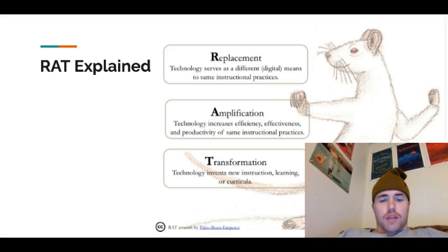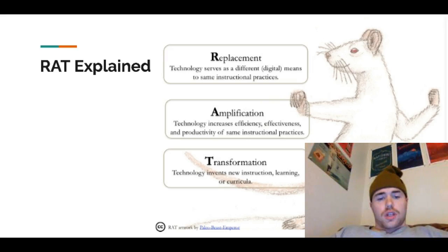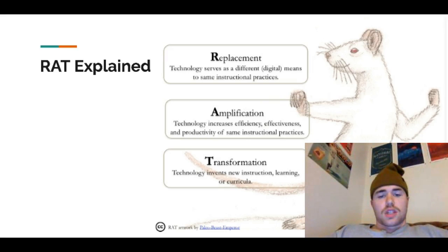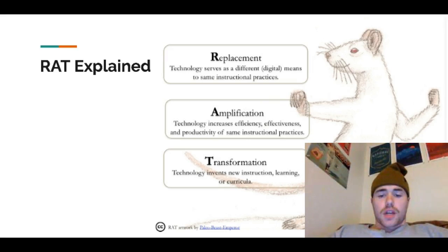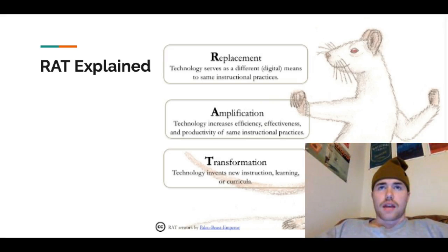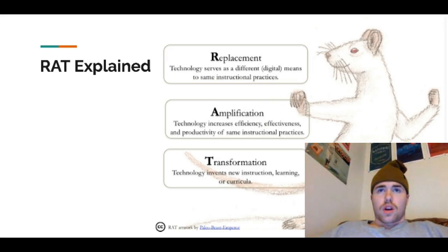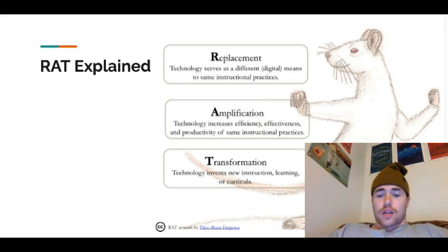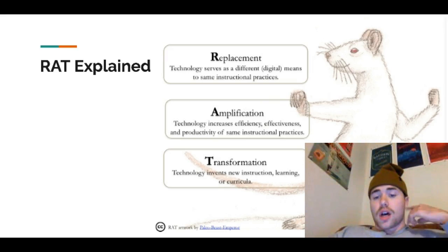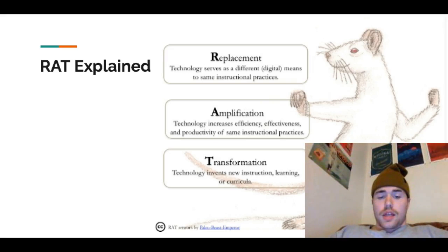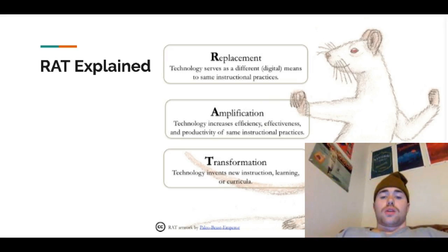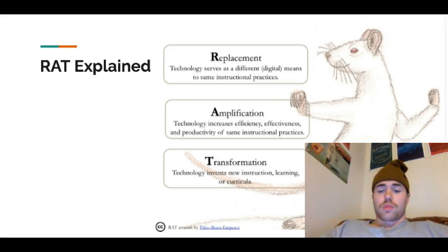The A in RAT stands for amplification, which they define as technology increasing efficiency, effectiveness, and productivity of the same instructional practices. An example of this that I remember from high school would be how teachers would have us take our tests and quizzes online in order to get our scores back right away. This improved the efficiency of the classroom because students did not have to wait for test scores and the teacher didn't have to grade all of them. It also helped with productivity because we were able to see right away what we got wrong, so we knew what we needed to work on for next time.